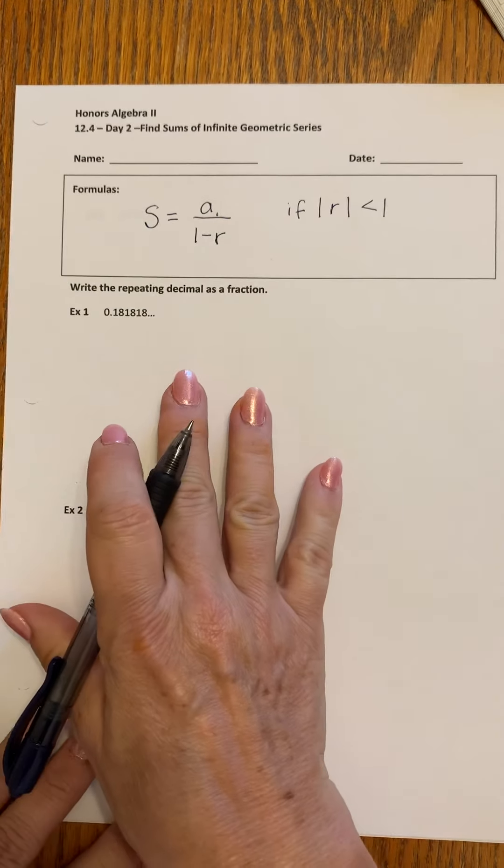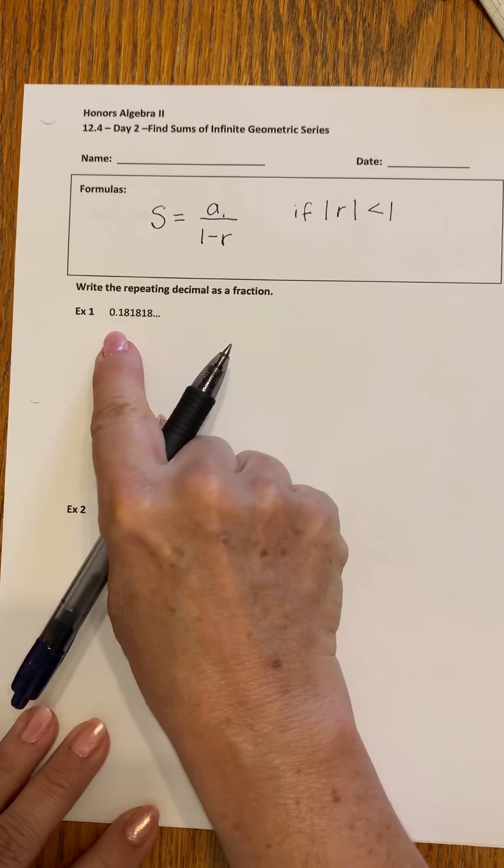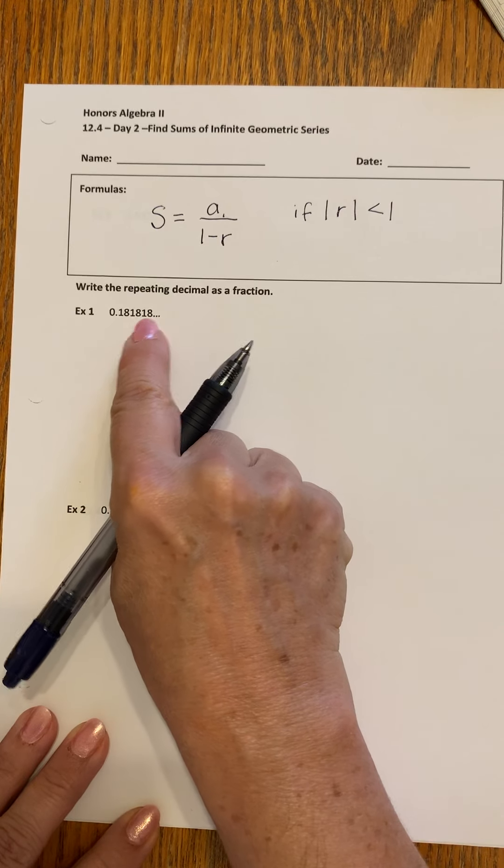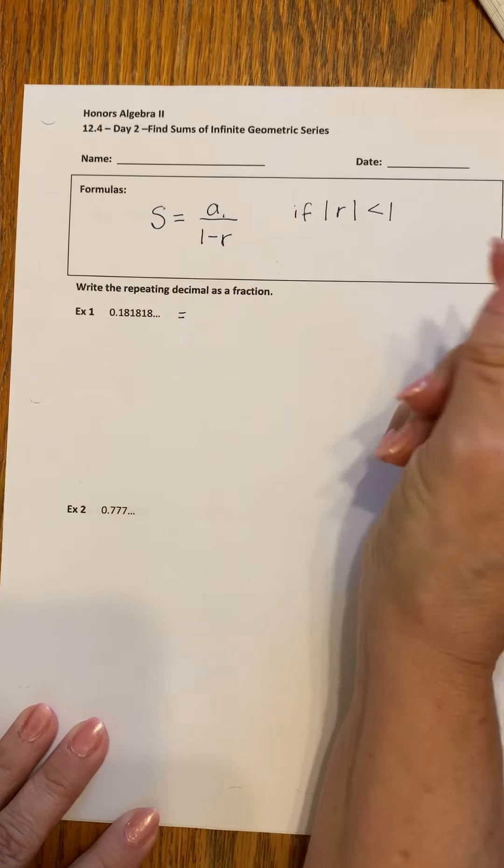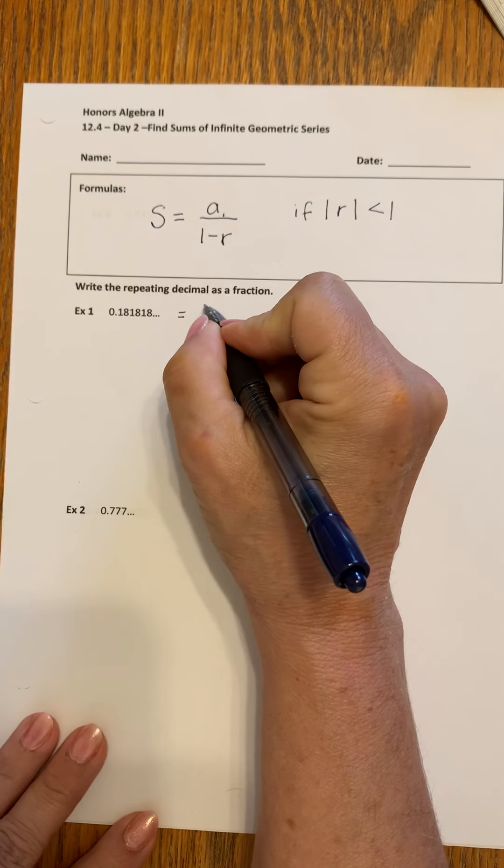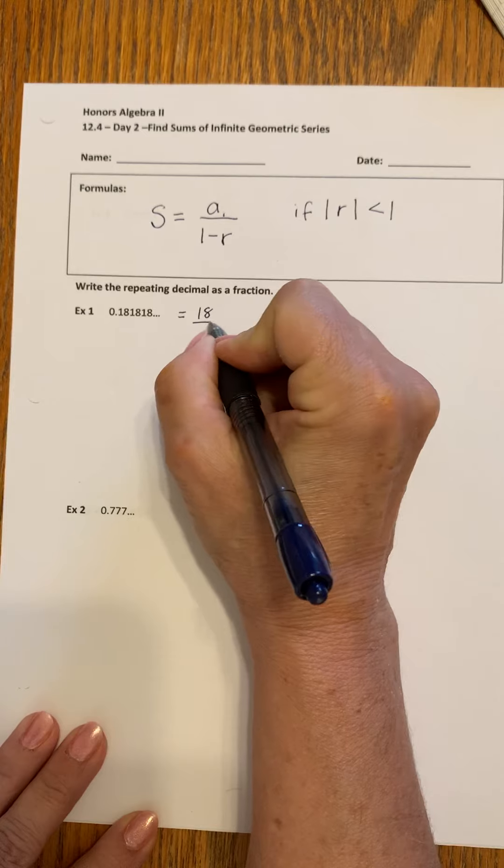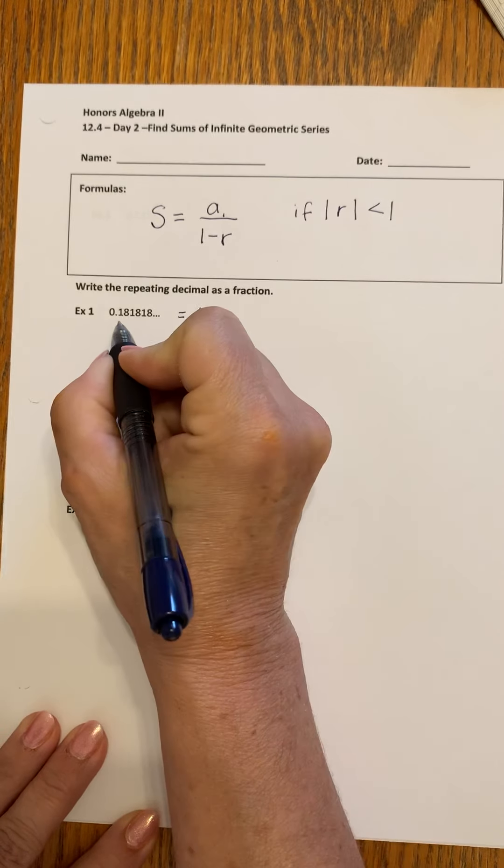We can only use this if the absolute value of r is less than one. So we're going to put this in practice by looking at 0.181818. This is going to be the same thing as saying 18 over 100.